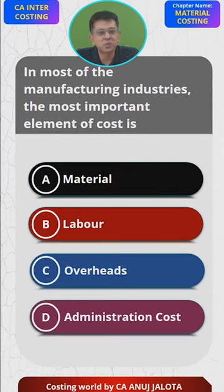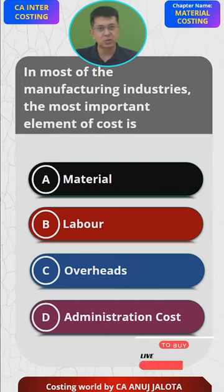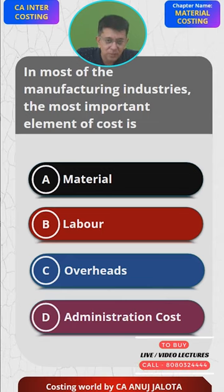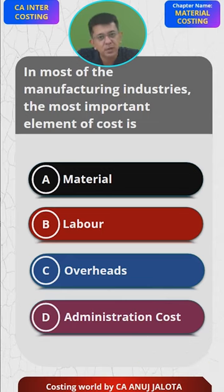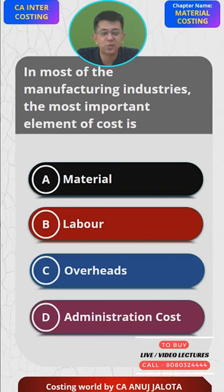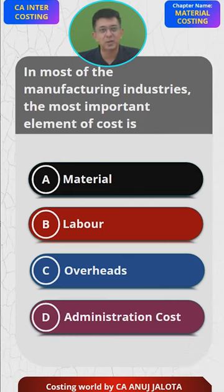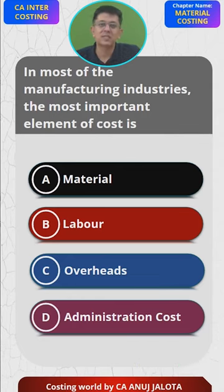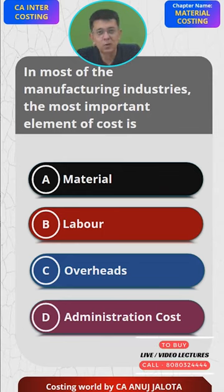Now some questions are, to be very honest, very stupid — and this is one example of a stupid question by the institute. You cannot say that material is the most important element; it actually depends upon the type of company. It might be a manufacturing company, but labor might be most important. In most fully automated companies, overheads become most important because depreciation on machines will be super high. Same question asked under labor costing — should the answer be labor? I honestly don't know.